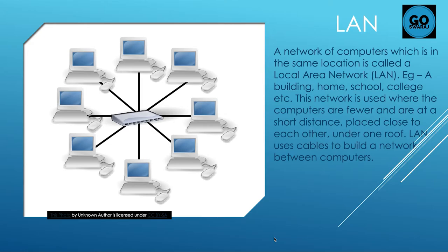A LAN is used where the computers are fewer and are at a short distance, close to each other, under one room. LAN uses cables to build a network between computers.